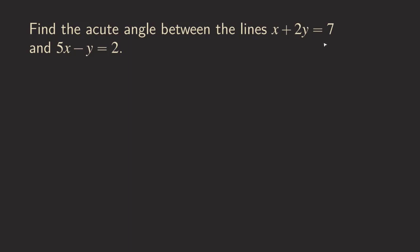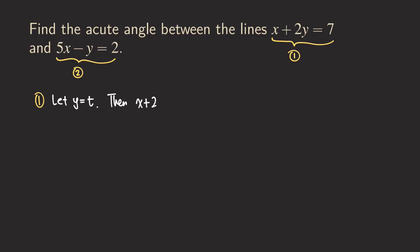First, I can find a parameterization for each line. I'll label the first equation as line 1 and the second as line 2. For line 1, I'm going to let y equal t. Plugging t into the equation gives x plus 2t equals 7. Solving for x, I move the 2t to the right-hand side and get x equals negative 2t plus 7.